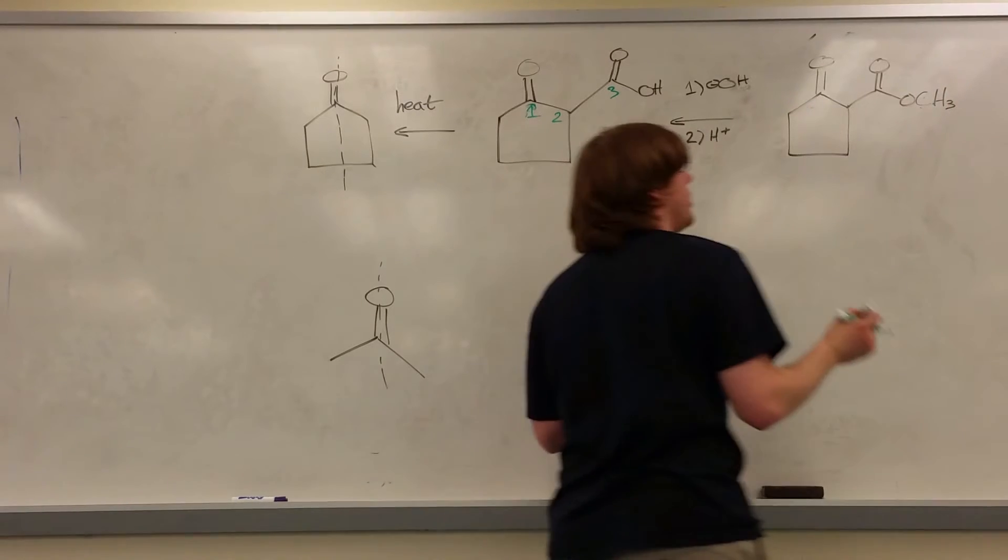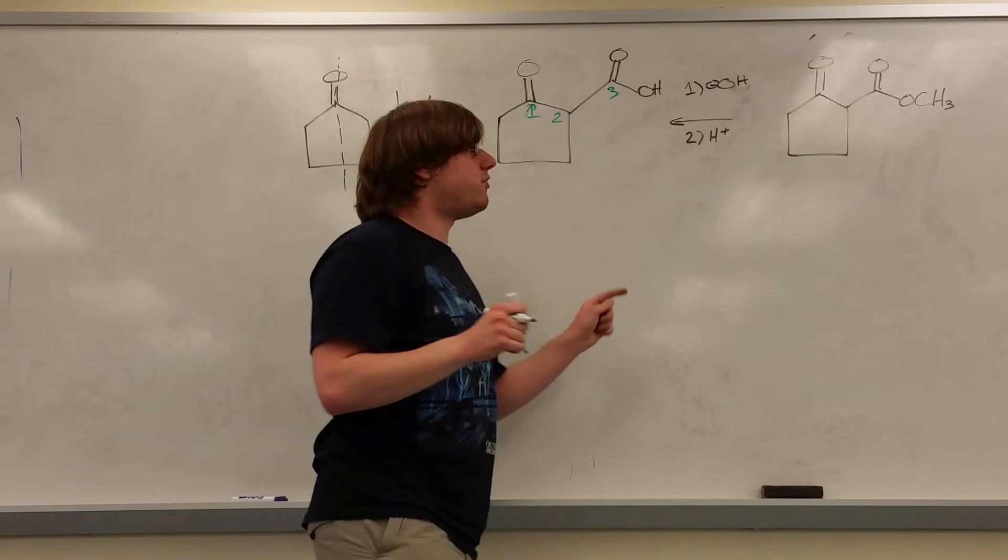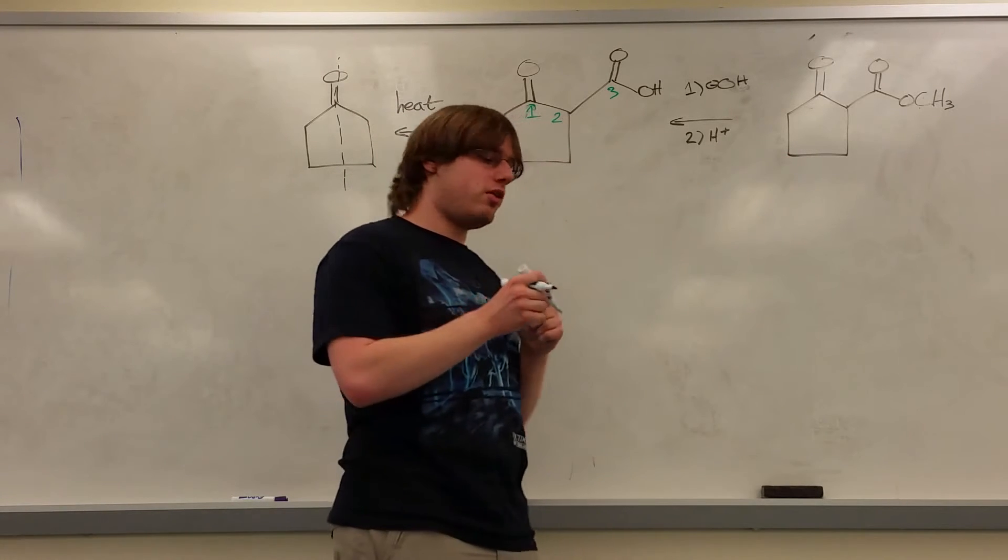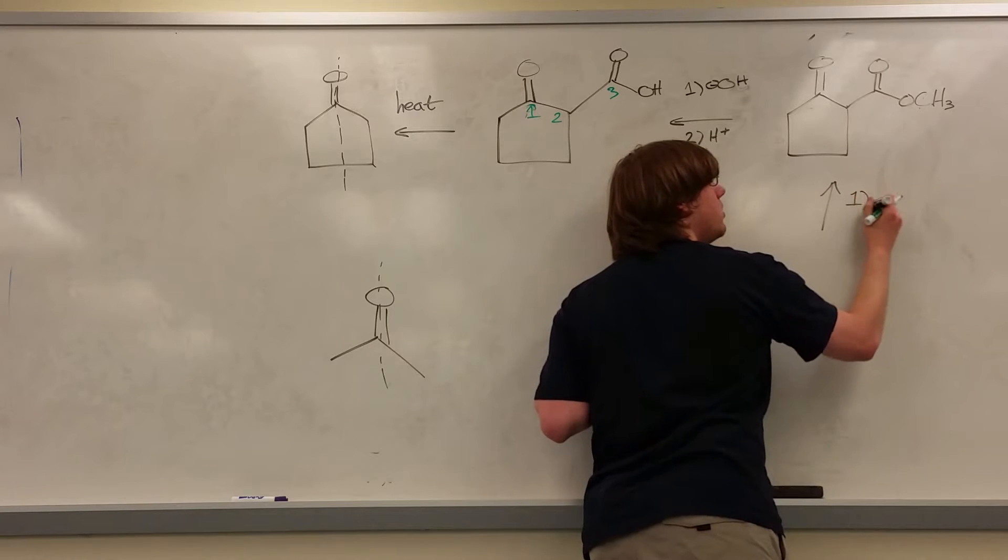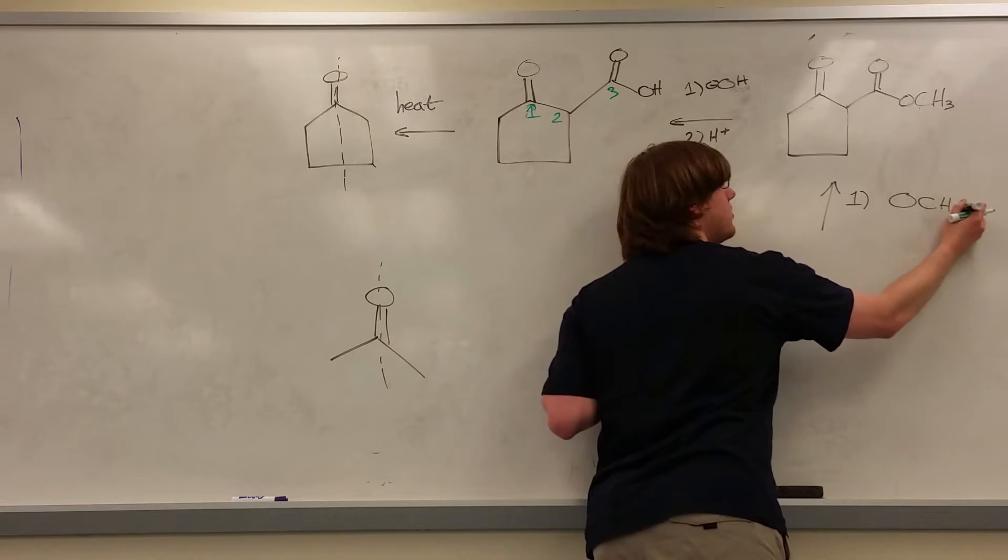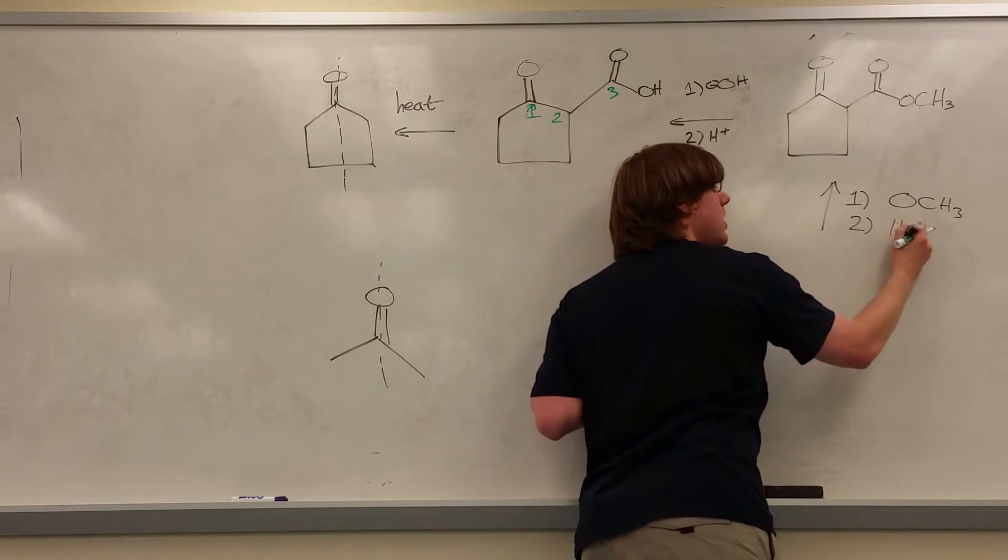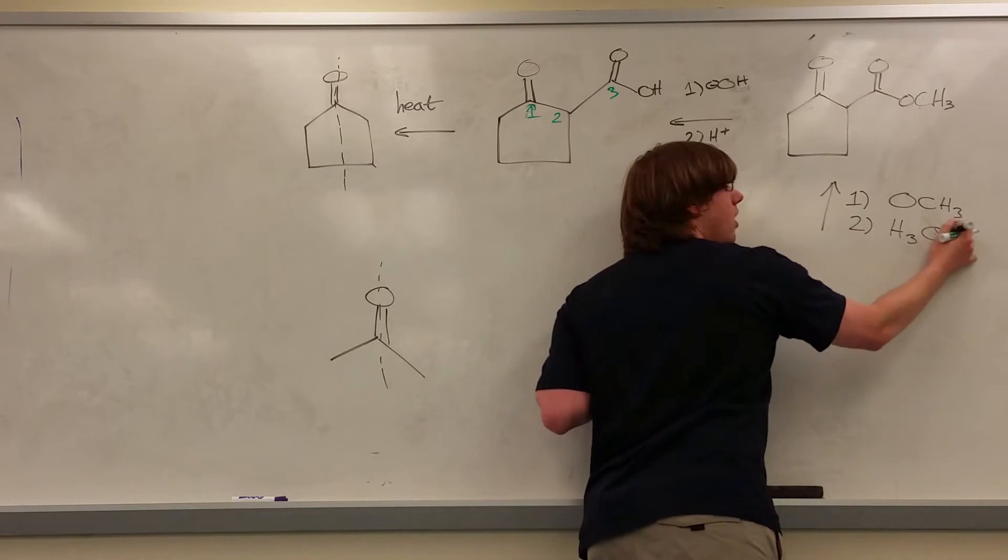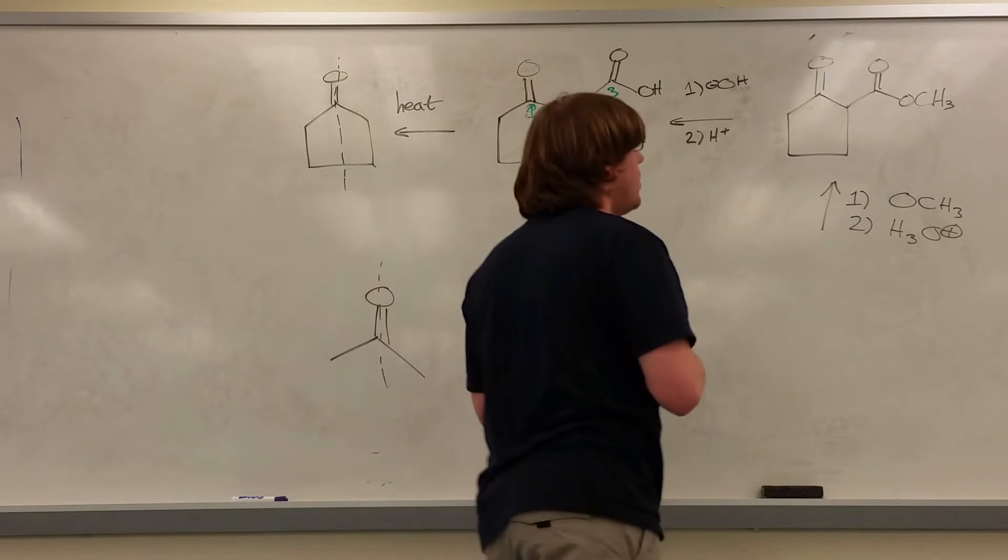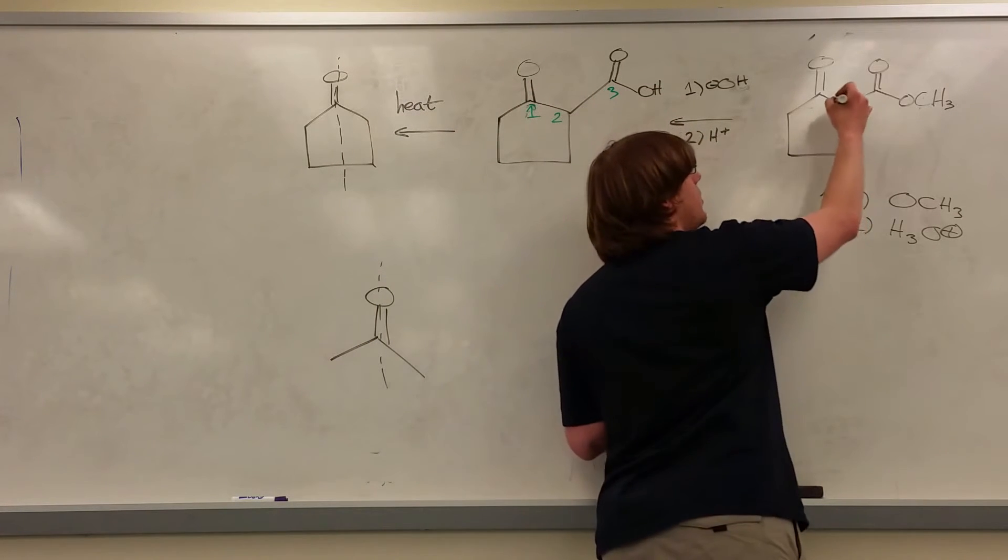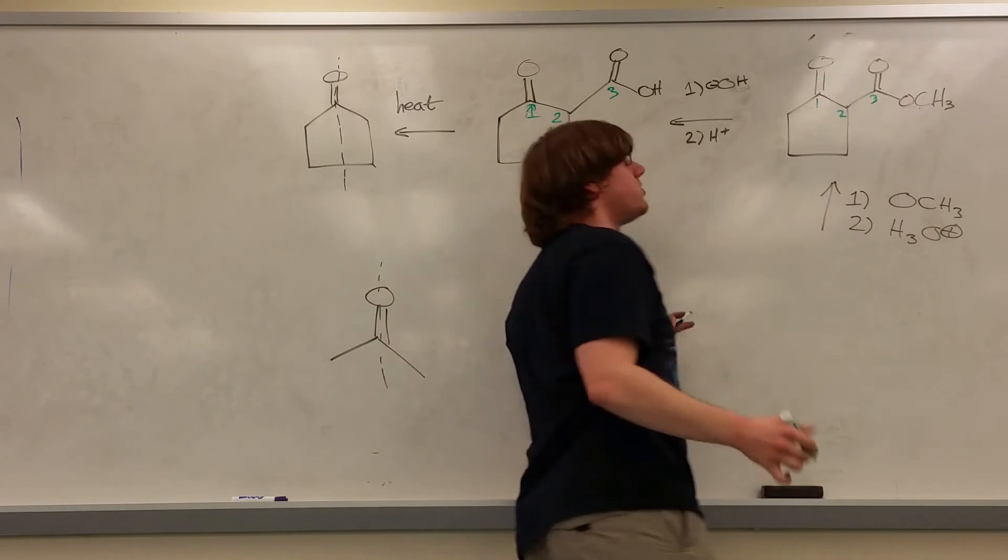And now we have to go backwards. We have to figure out what did this look like before the Claisen condensation, right? Because the next step should be step one, OCH3 minus, remembering that the base should always match the OR group. And step two, H3O positive. Well, here's how you do it. Once again, do that numbering setup. Let's say the carbonyl is one, the alpha carbon is two, and the ester is three.